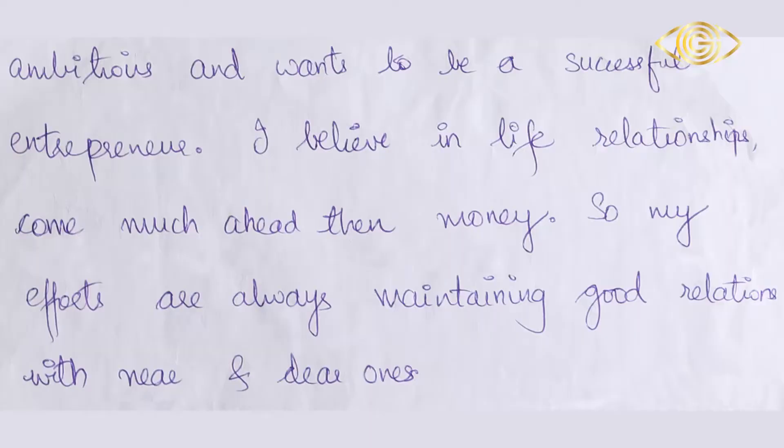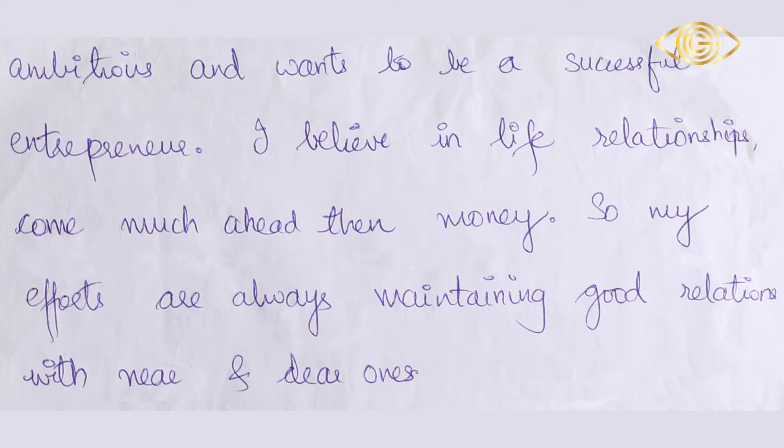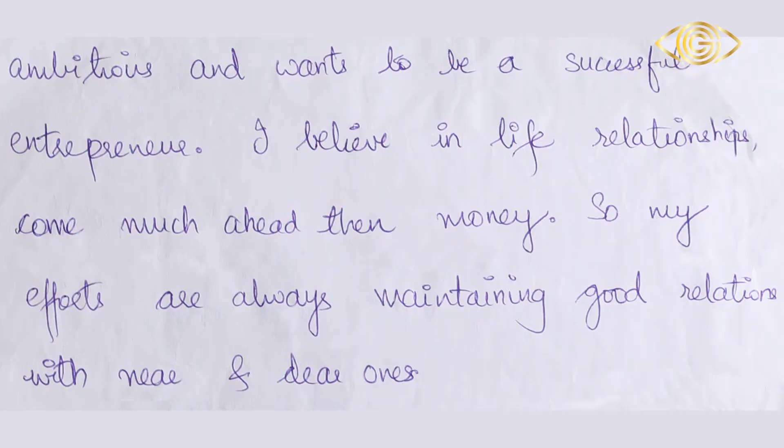Looking at oval-shaped letters, when they are clearly and cleanly made — with the space inside the oval completely clean, avoiding any loop or hook formation within — that indicates honesty. In this particular handwriting sample, all the oval-shaped letters were quite neat and clean compared to other samples. They were complete oval shapes without any loop, hook, or any other abnormal formations. That showed the writer is honest.